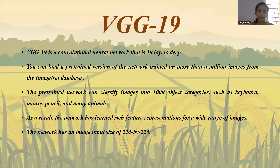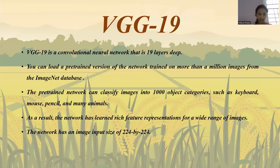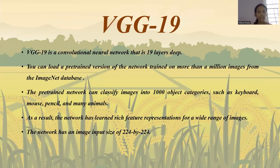VGG-19 is one type of convolutional neural network model. The name '19' is given because it uses 19 different layers. Another key point is that VGG-19 requires input images of size 224 by 224 — this is the main reason why we pre-process our images to that specific size.